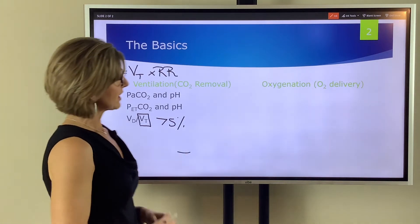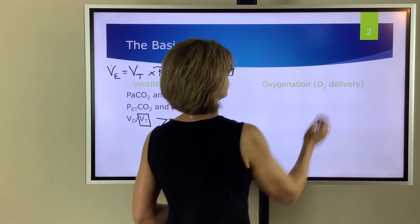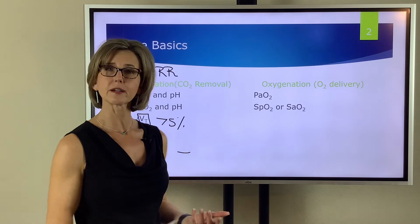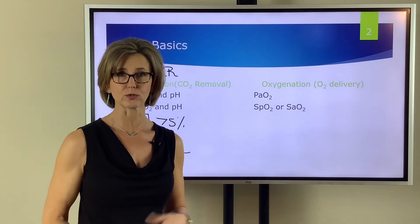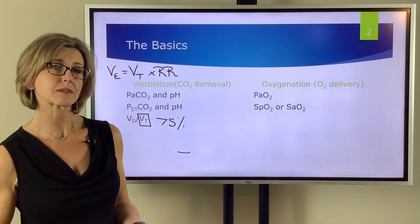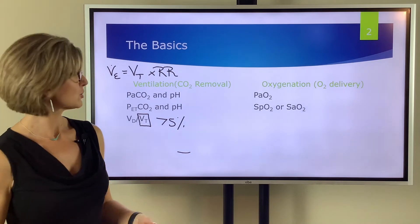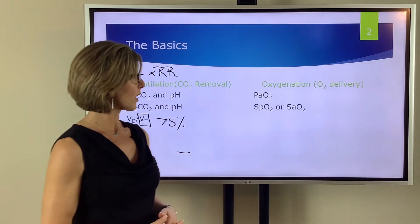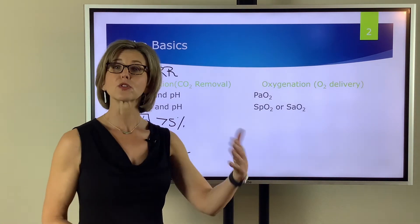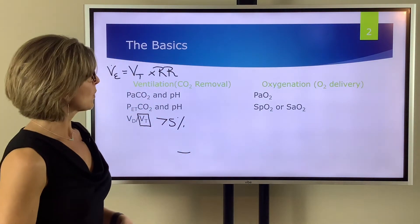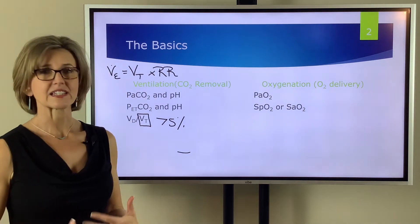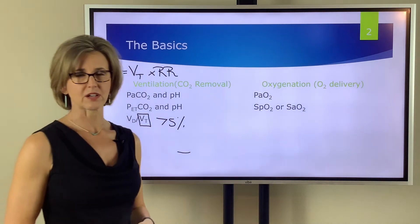All right when we look at oxygenation, if we want to see how adequate our patient is oxygenating we're going to get a blood gas and we're looking at the PaO2. Now again if we don't want to stick the patient to look at the PaO2 we can put a pulse ox on them and look at the SpO2 or we can get the SaO2 also from a blood gas. So these two things can be used to assess how adequately a person is oxygenating.